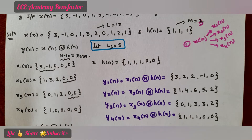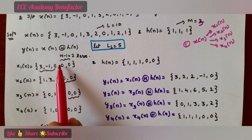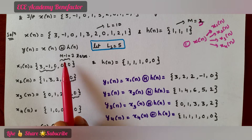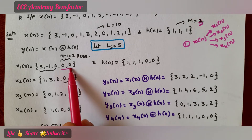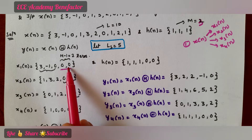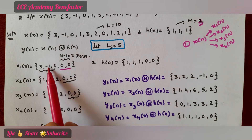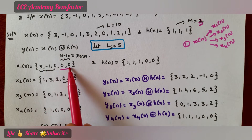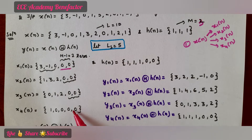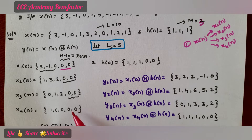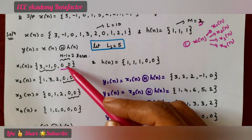In the overlap add method, we take the first 3 new elements from x(n): {3, -1, 0}, and add M-1 zeros at the end. Since M = 3, M-1 = 2, so we add 2 zeros. In overlap add, 'add' means you are adding M-1 zeros — that is, 2 zeros — to each section.